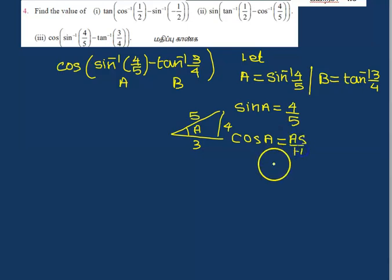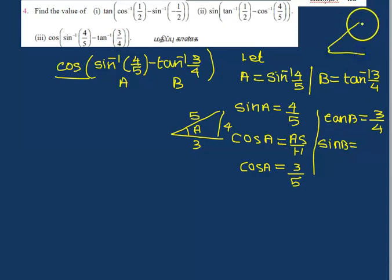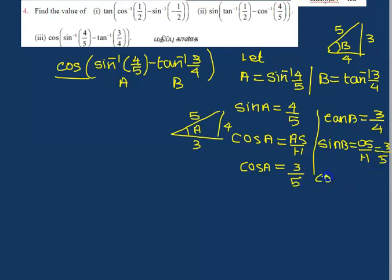Sin A equals 4 by 5, so opposite side is 4, hypotenuse is 5, adjacent side is 3. For B, tan B equals 3 by 4, so opposite side is 3, adjacent side is 4, hypotenuse is 5. Sin B equals 3 by 5, cos B equals 4 by 5.